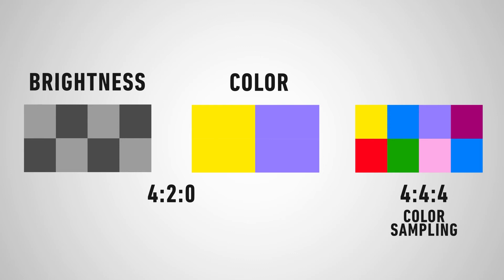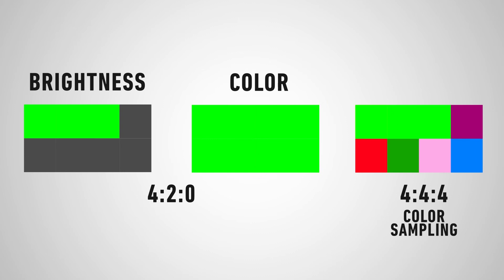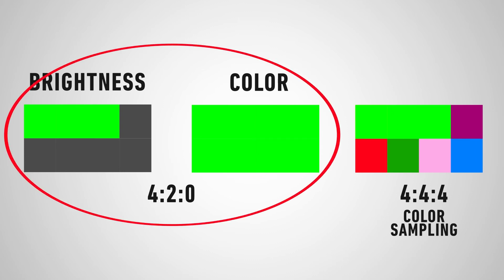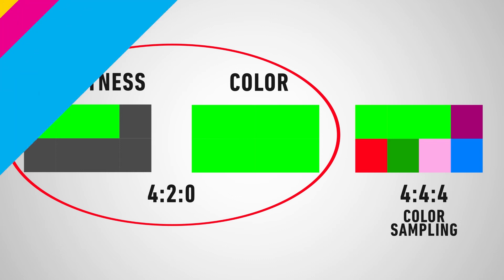On a side note, now you know why it's not a good idea to use 4:2:0 footage for green screen keying, because the color compression doesn't represent the full image. You've probably seen that when you try to key small details like hair with DSLR footage.